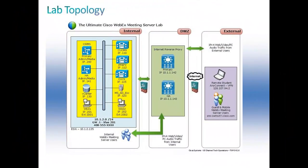This lab topology represents the system configuration for this lab. Notice the topology is broken up into three sections: internal, DMZ, and external. The Cisco Unified Communications Manager, Presence Server, Unity Connect, and Active Directory are all completely installed and configured before this video was recorded. Please stop the video to take time to familiarize yourself with this topology and restart the video when you are ready.